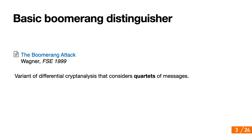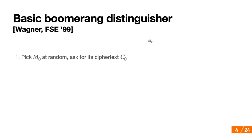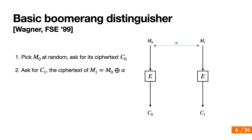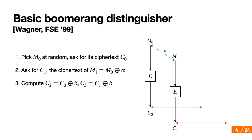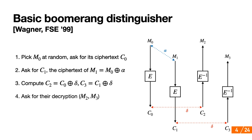What you're going to do is first choose M0, use E your block cipher to obtain the corresponding ciphertext C0. Then you construct M1, which is M0 XORed with a difference alpha, and get C1. Two additional ciphertexts C2 and C3 are then computed by adding a difference delta to C0 and C1, and the corresponding plaintexts M2 and M3 are retrieved. Finally, we check if M2 and M3 differ by alpha. If the probability is higher than for a random permutation, then we have a distinguisher.